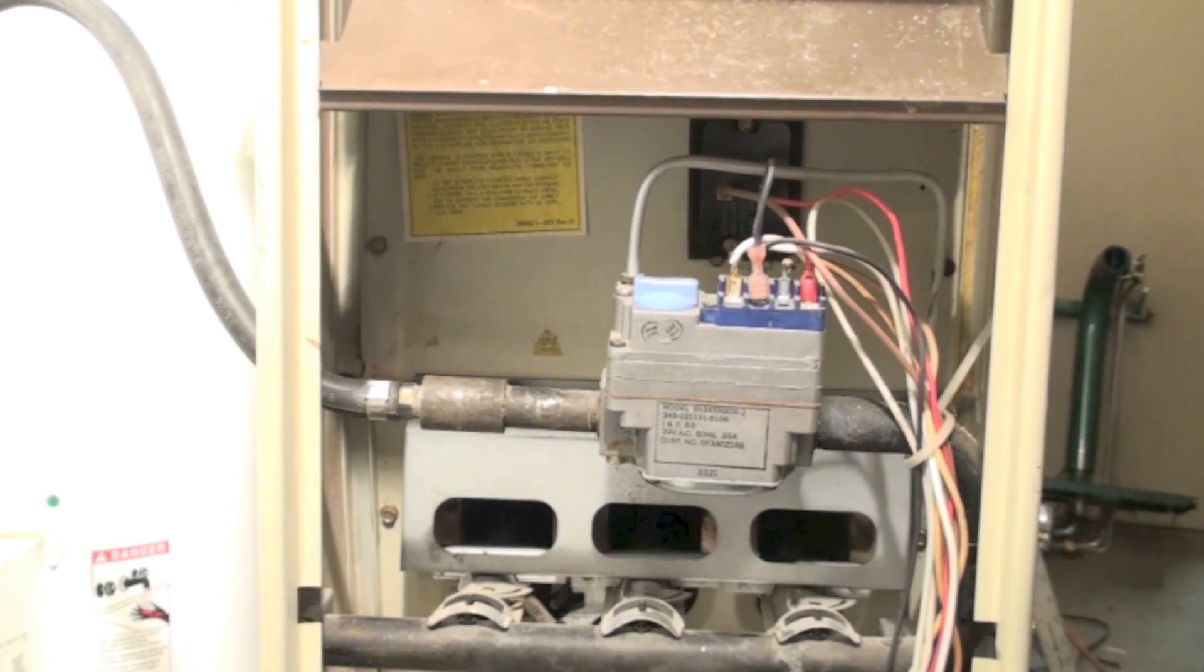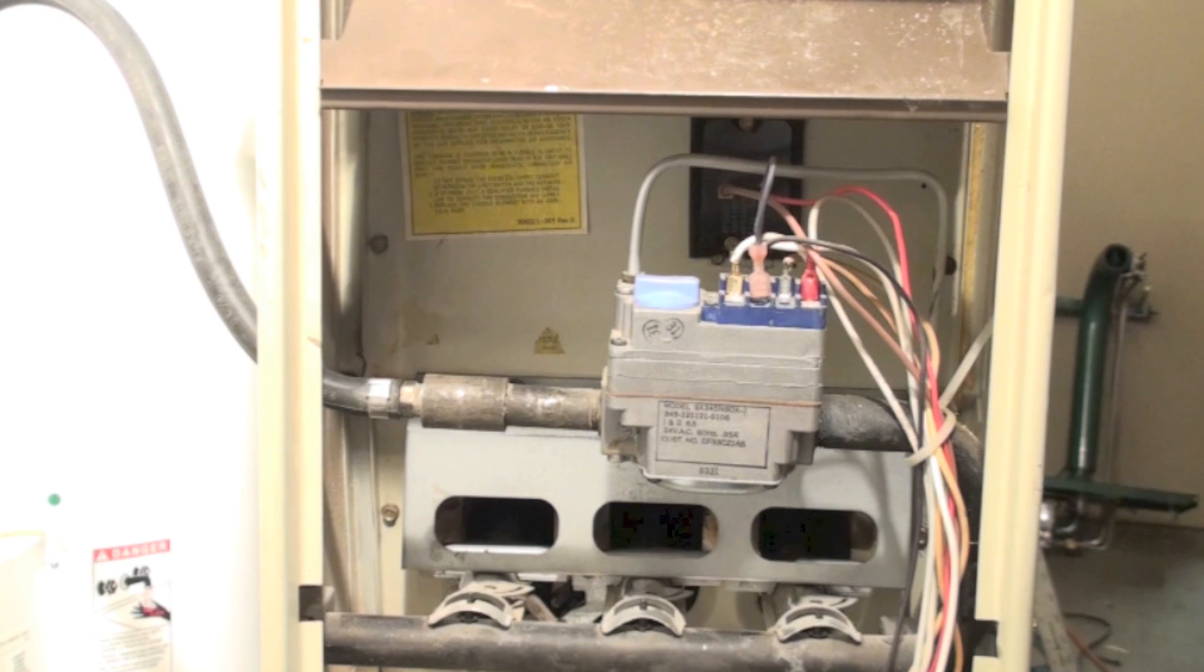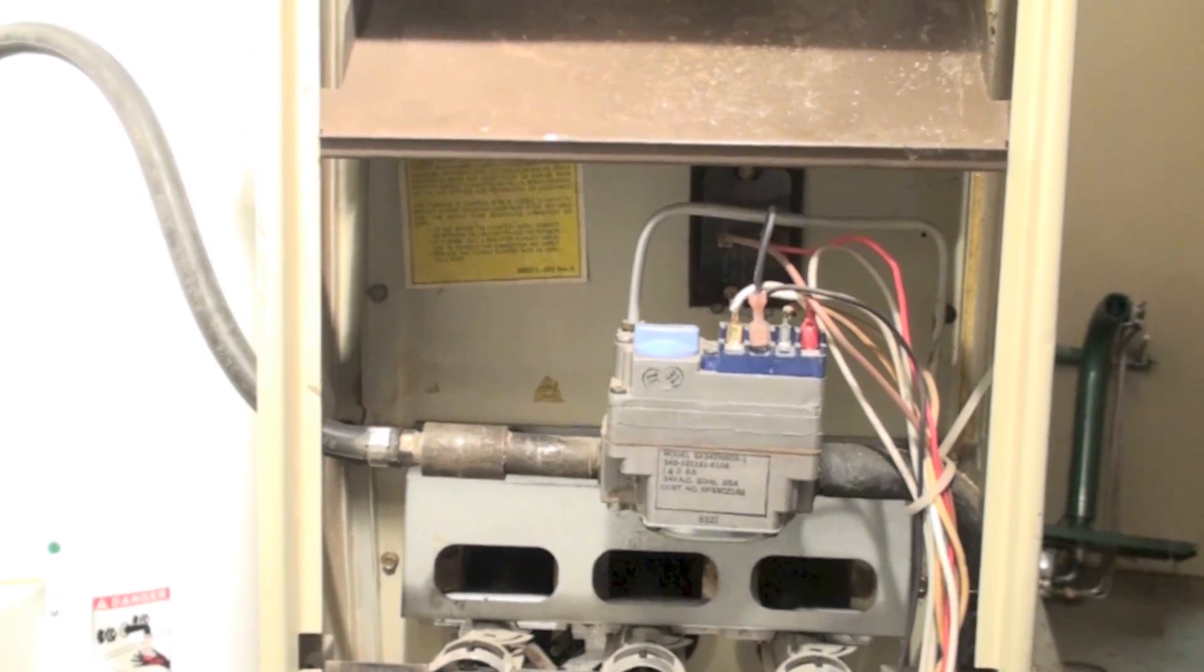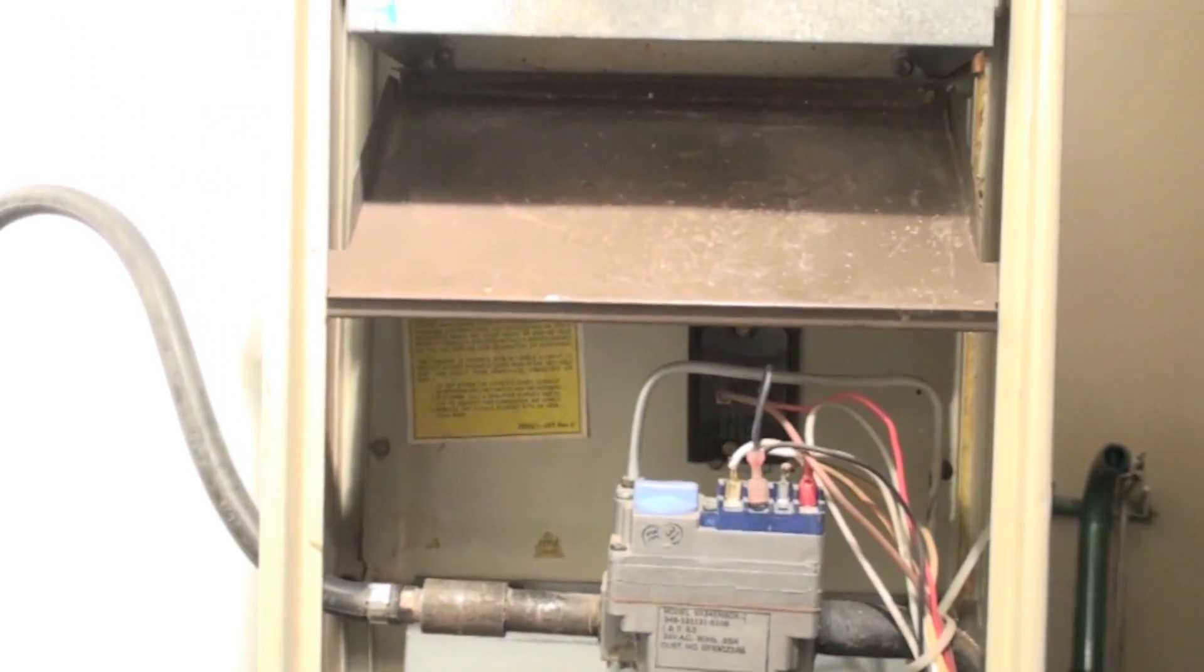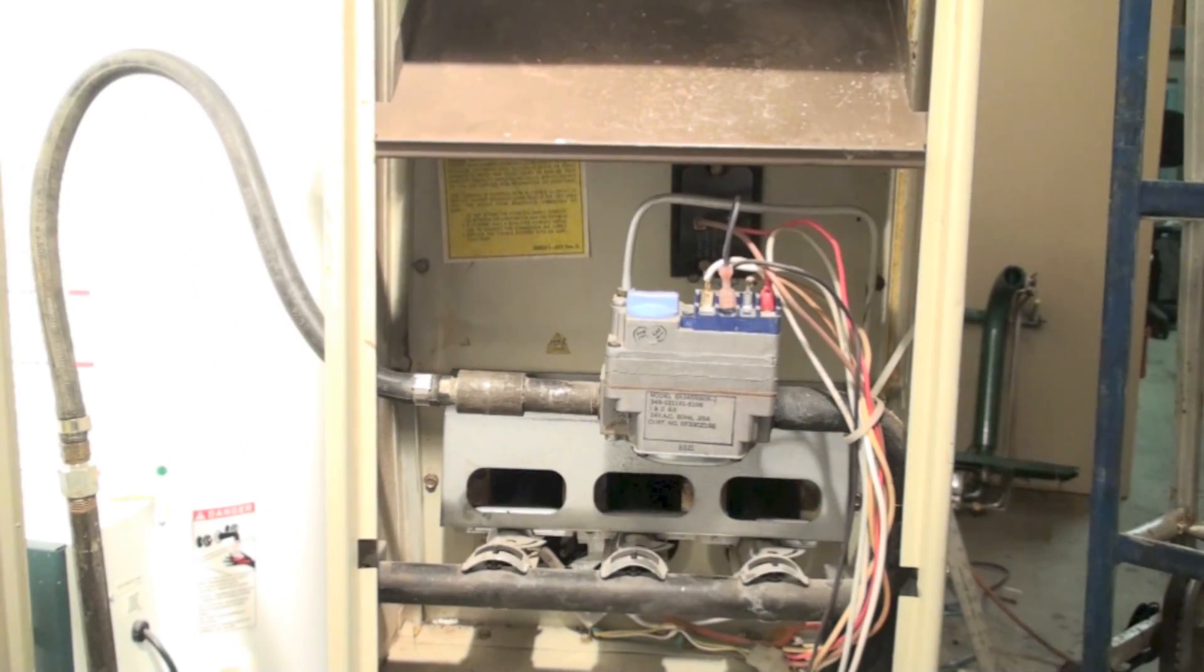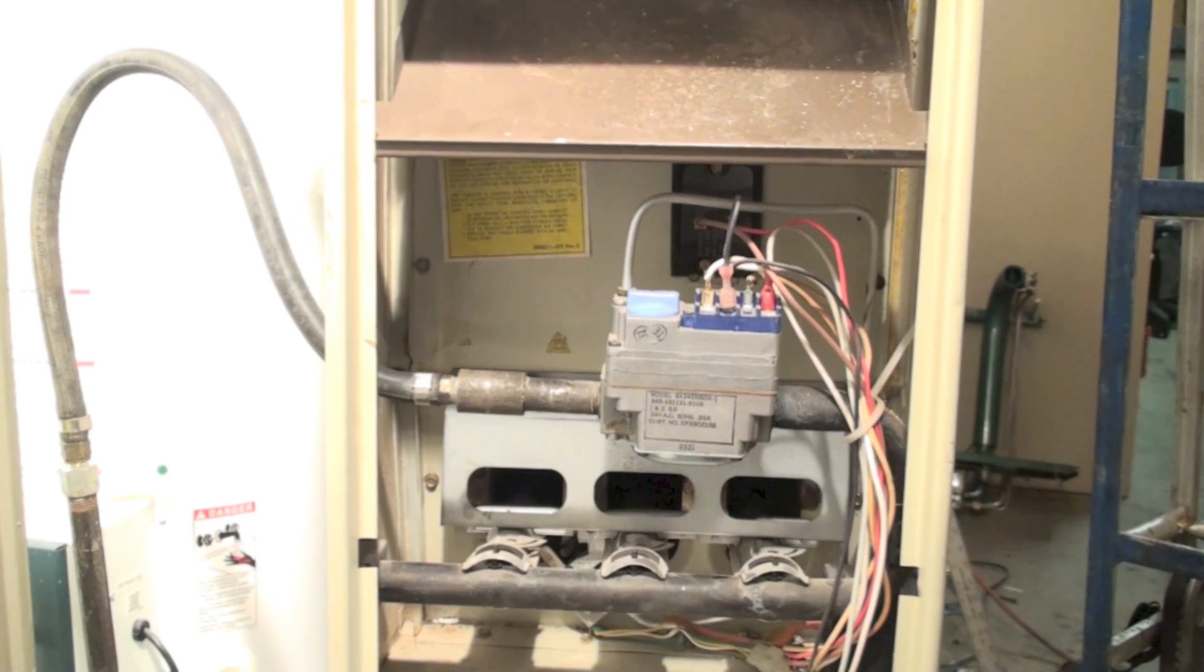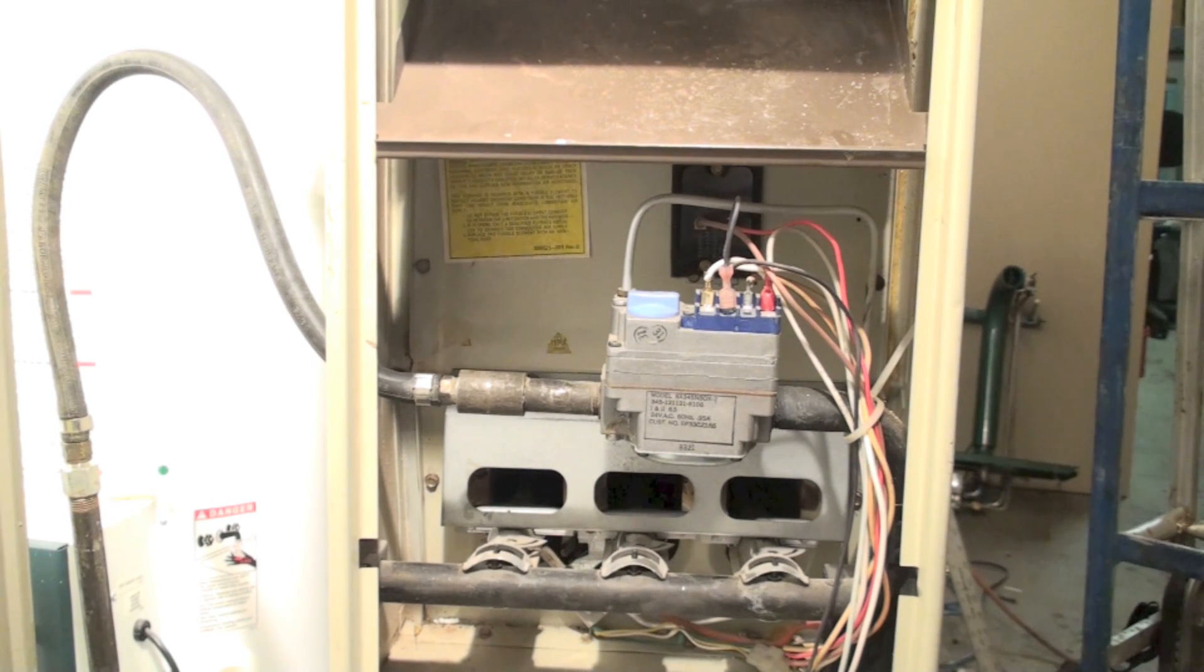Compare that to an automobile driving at say 40 miles an hour, not speeding up, not slowing down, and then take the same automobile and have it come up to speed, slow down, come back up to speed - stop and go driving. There's going to be a difference in the efficiency between those two actions. So this 80% steady state is comparable to the 40 miles an hour in the car.